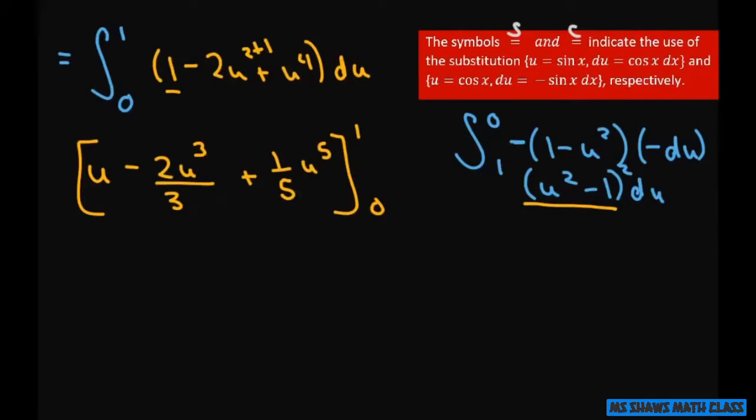So now let's plug in our 1. That's going to give you 1 minus 2 3rds plus 1 5th minus, you plug in 0, you get a big 0 there.